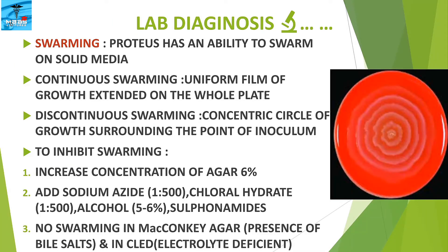Swarming: Proteus has an ability to swarm on solid medium. Swarming appears in two patterns — continuous swarming, where a uniform film of growth extends over the whole plate, and discontinuous swarming, where concentric circles of growth surround the point of inoculation. To inhibit swarming, increase agar concentration to 6%, or add sodium azide 1:500, chloral hydrate 1:500, alcohol 5–6%, or sulfonamides.